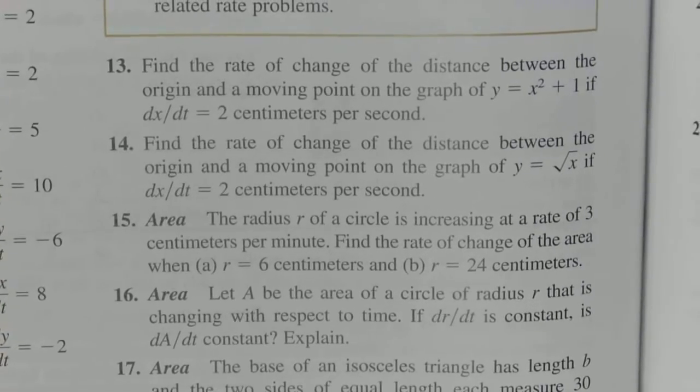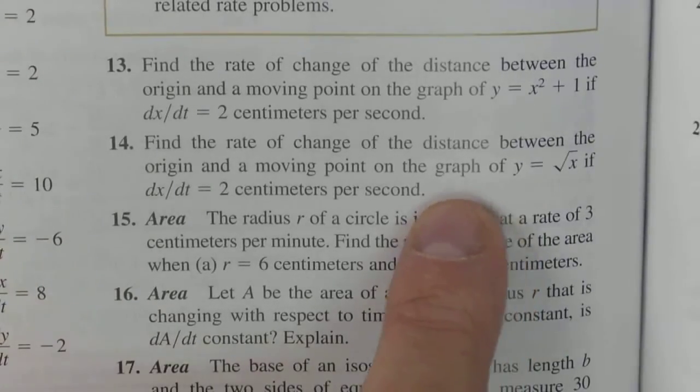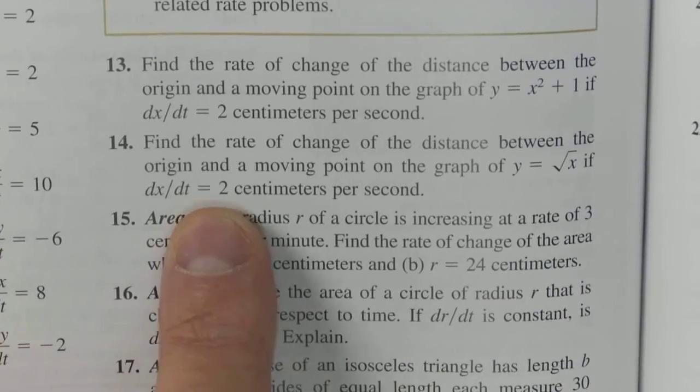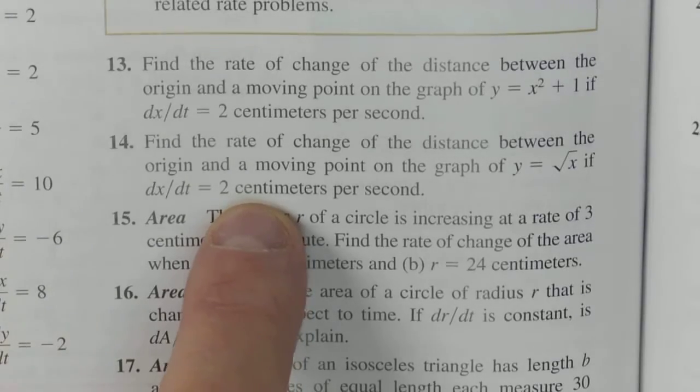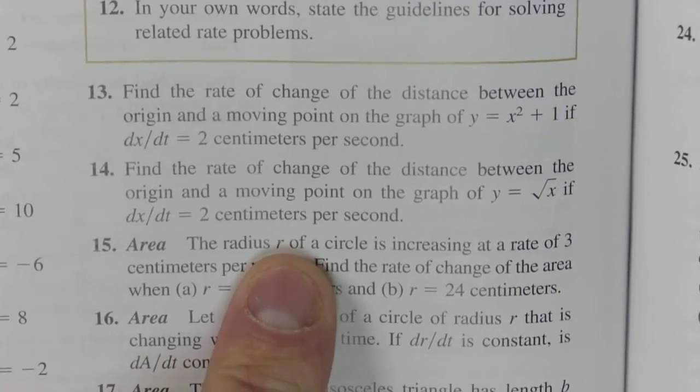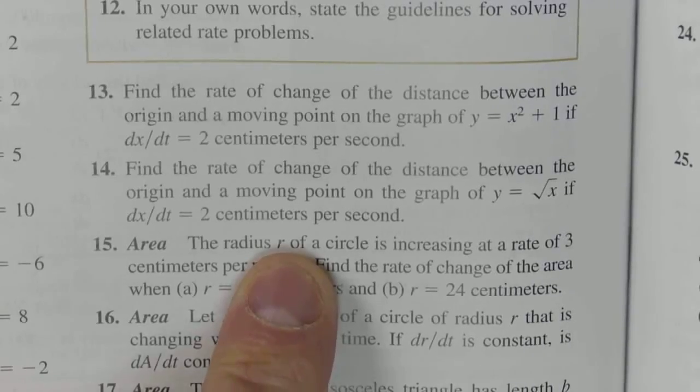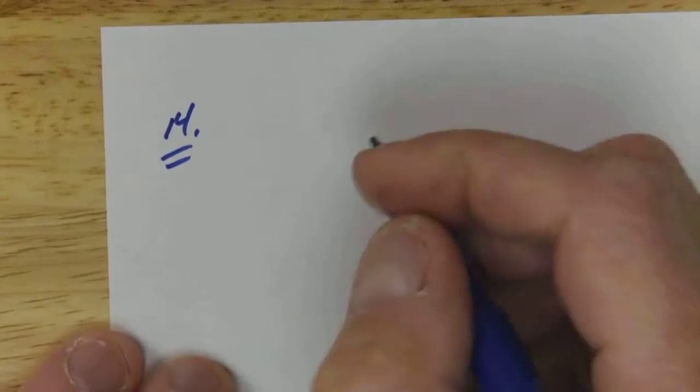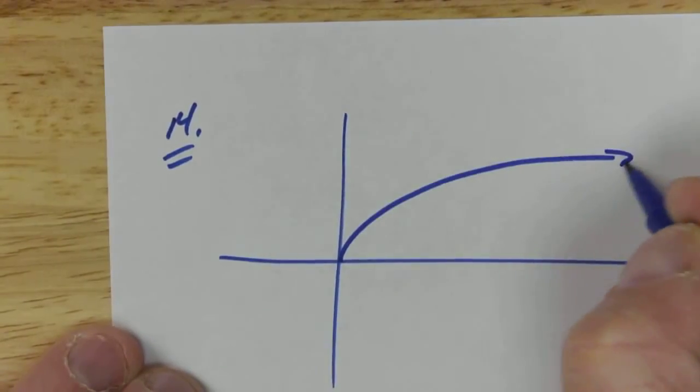It says find the rate of change of the distance between the origin and the point on the graph if that rate of change is 2 centimeters per second, and then I'm going to have you do 13, so you can jot 13 down right now or screenshot that. So let me do 14. This I think is a problem you very well might see later on in your life. So I'm going to smoke through this like nobody's business. 14, find the rate of change of distance between the point between the origin and a point on this graph y equals square root of x.